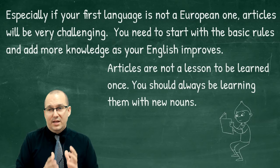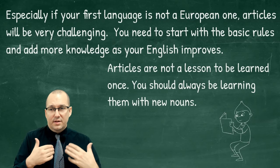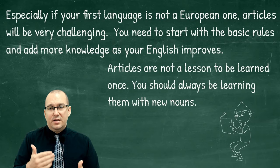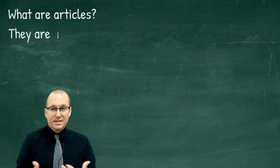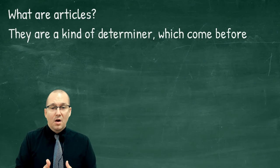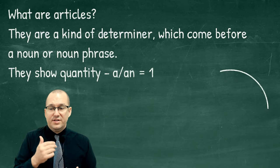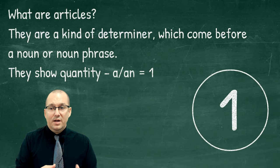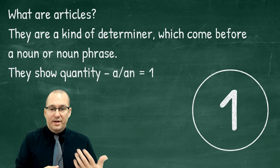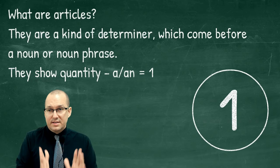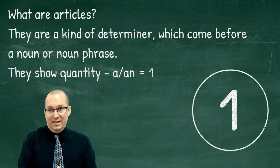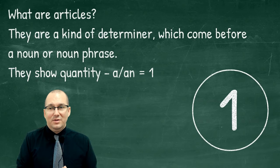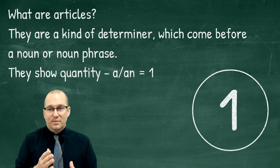This video is designed to make you aware and to improve your ability to notice and use articles better when you're writing and speaking. In grammatical terms, articles are a kind of determiner — words that go before a noun or noun phrase. One simple rule to remember: 'a' equals one. If you remember that one rule, that will help you a lot. That's step one in understanding what articles are.